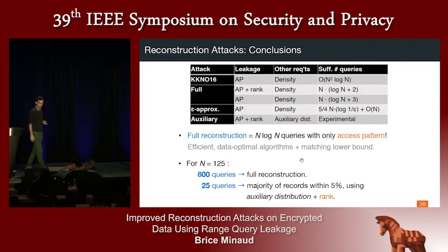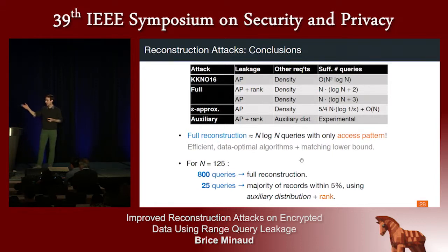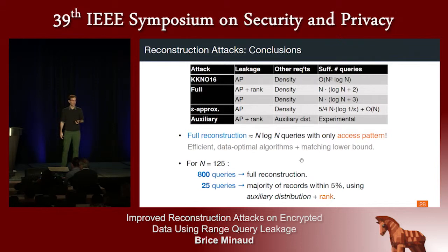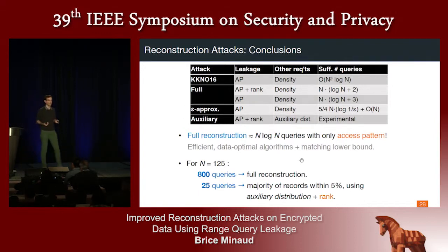In conclusion, we presented two attacks. The main attack is that after just n log n queries you can recover everything in the very generic setting with only access pattern leakage, using a data-optimal algorithm. Concretely, for age data in a hospital, n = 125, so after just about 800 queries you can recover the value of every record in the database. For comparison, prior work required upwards of 100,000 queries — so this is really much more devastating than what was previously known. Furthermore, in concrete cases with an approximation of the distribution and rank leakage, just 25 queries can recover a majority of records within 5% error in our real-world hospital age data experiments.